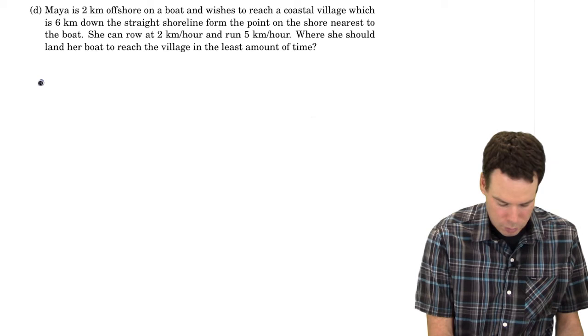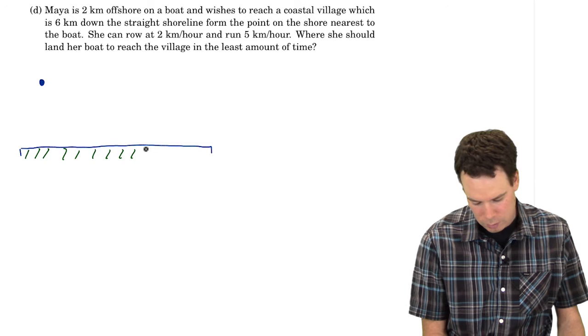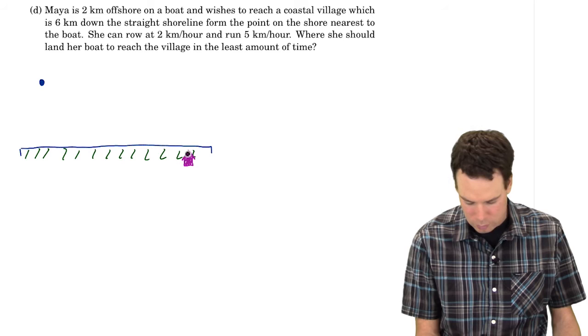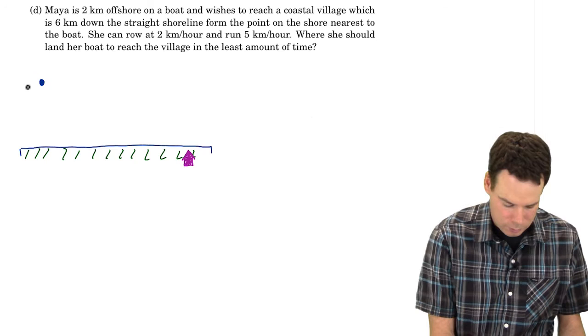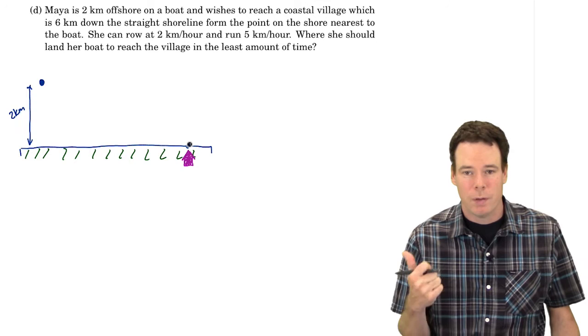So she's on a boat out in the water here and we've got a straight shoreline. Let's indicate this. Here's our shoreline and she's interested in getting to some coastal village. So here's our little village down the shoreline. She wants to get from way out here which is two kilometers off the shore to this destination point over here. She wants to do it in the least amount of time.